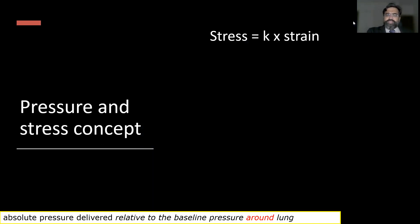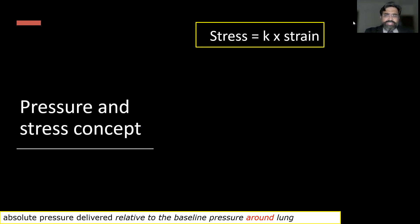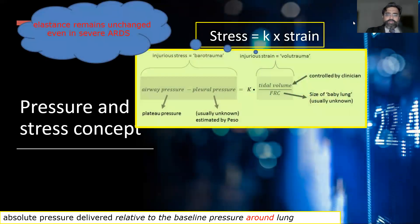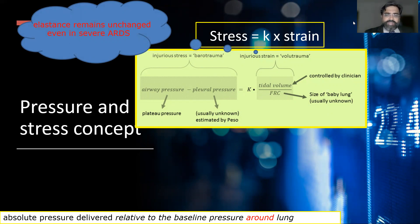The pressure and stress concept: stress is very closely related to strain by a constant A, which is the elastance — the inverse of compliance — usually equal to 12, and this does not change even in severe ARDS. Stress equals airway pressure minus pleural pressure, that is plateau pressure minus esophageal pressure (P_ESO), and equals K (the elastance) times strain, which is tidal volume divided by FRC. The tidal volume is controlled by the clinician, while FRC — the size of the baby lung — is usually unknown unless specific monitoring devices are available.